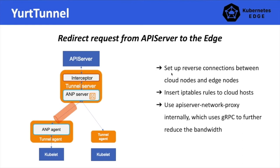After an HTTP request is encapsulated, the AMP server will pick the corresponding AMP agent and send a request to it.